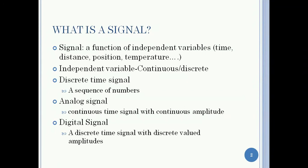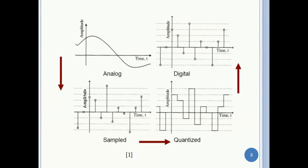A discrete time signal can be considered as a sequence of numbers. An analog signal is continuous in time as well as continuous on the amplitude axis, whereas a digital signal is a discrete time signal with discrete valued amplitudes. This figure gives an example of an analog signal which is continuous in time and continuous in amplitude, whereas a digital signal is discrete in time and has discrete valued amplitude levels.